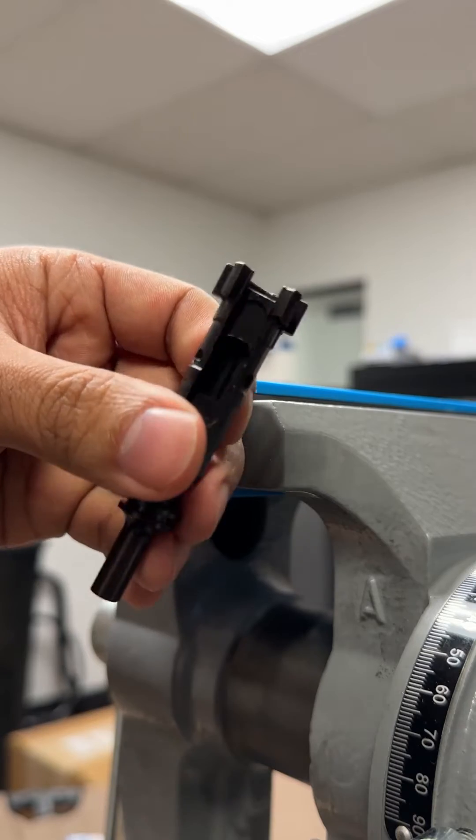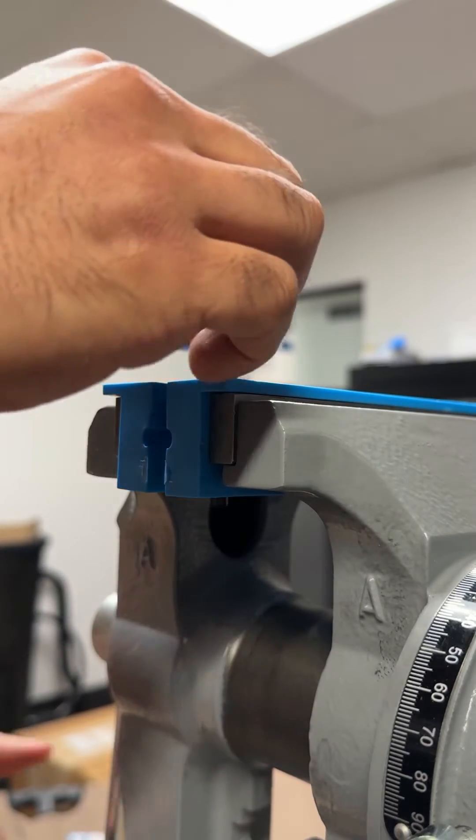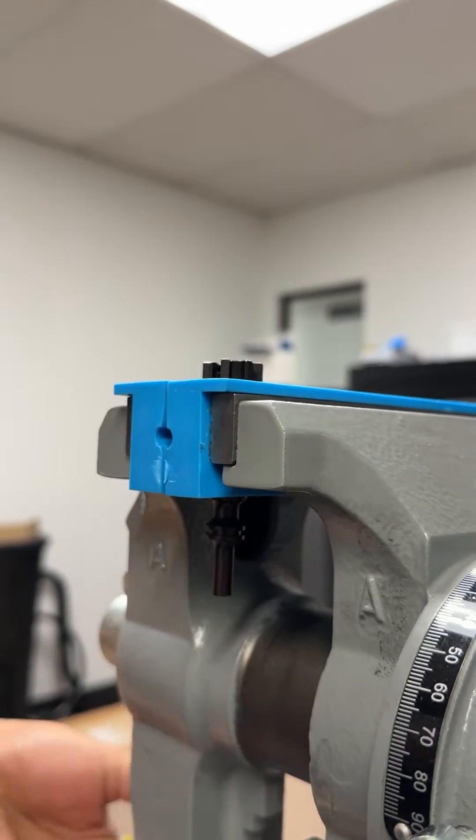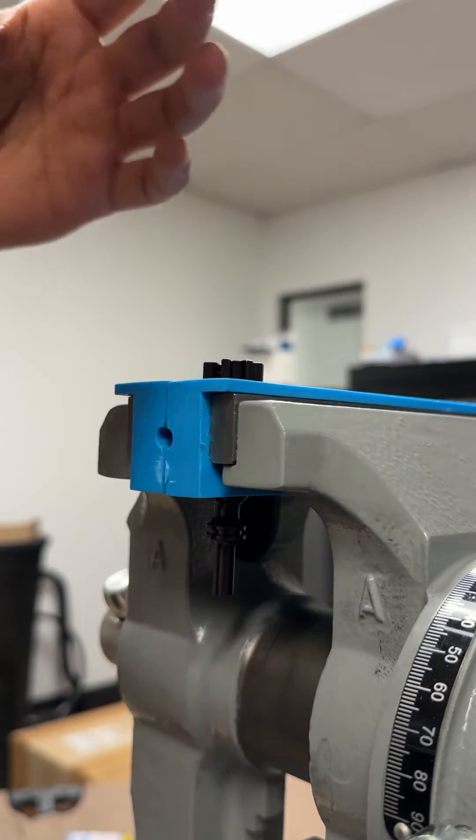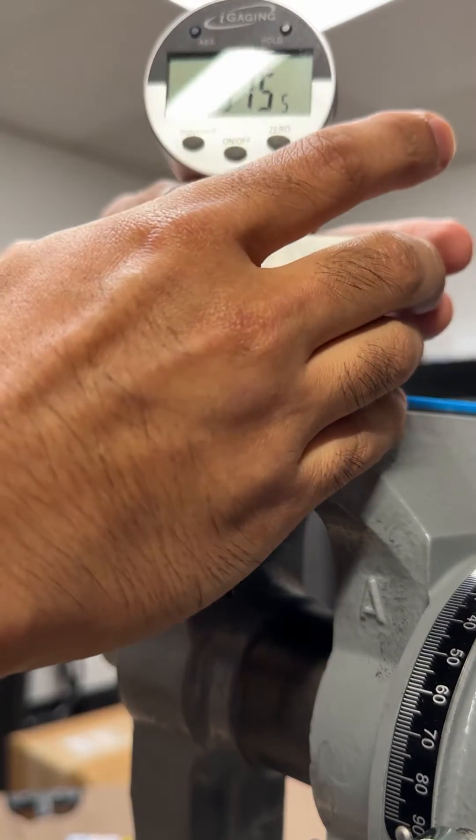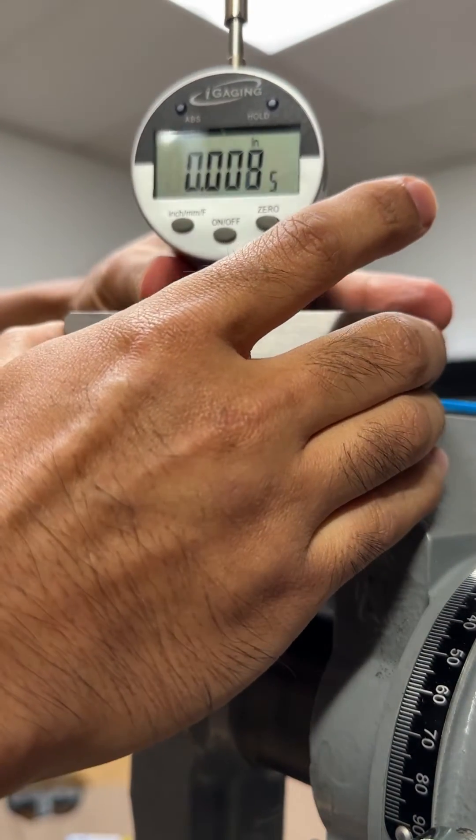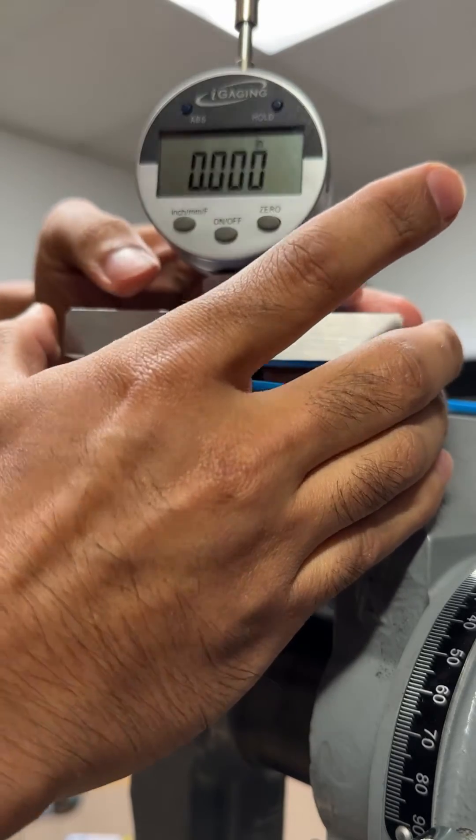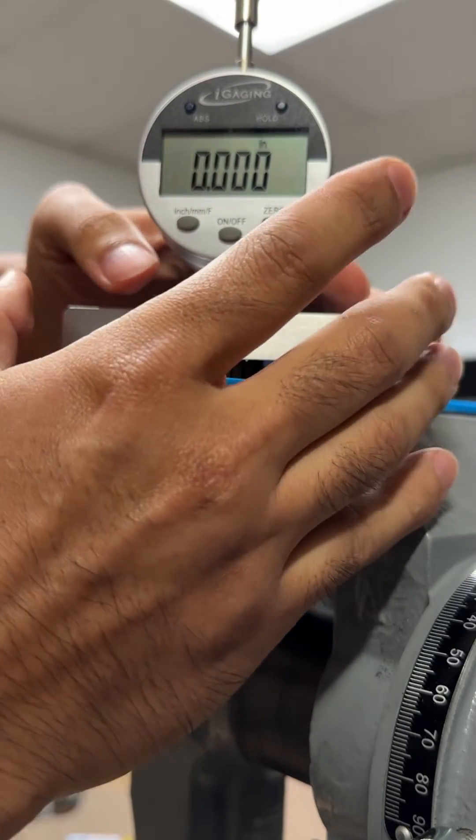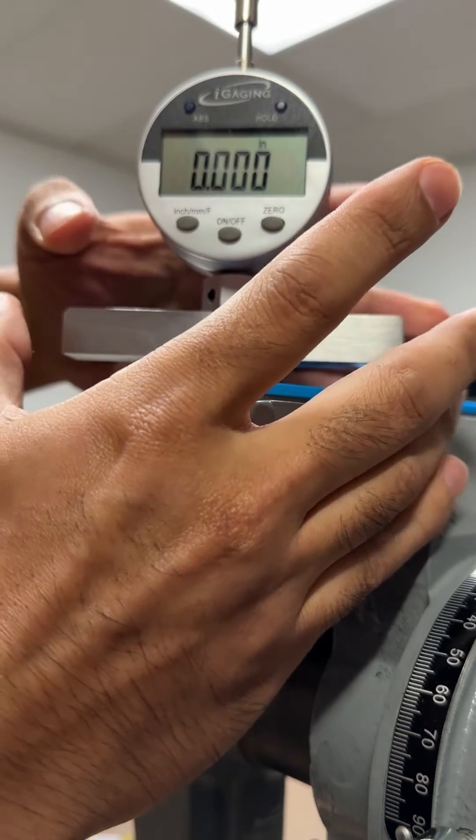We're going to take a stripped bolt mounted in the vise. We're going to take our depth gauge and make sure it's facing the camera. Zero for good measure.